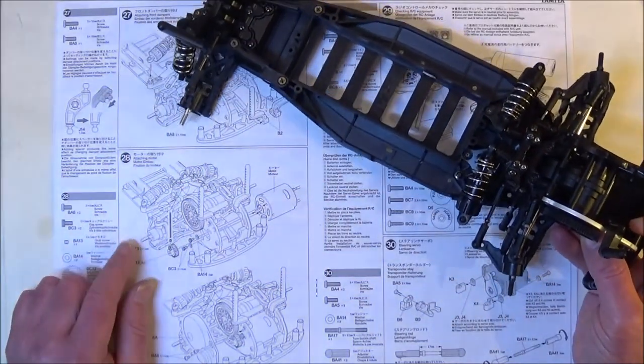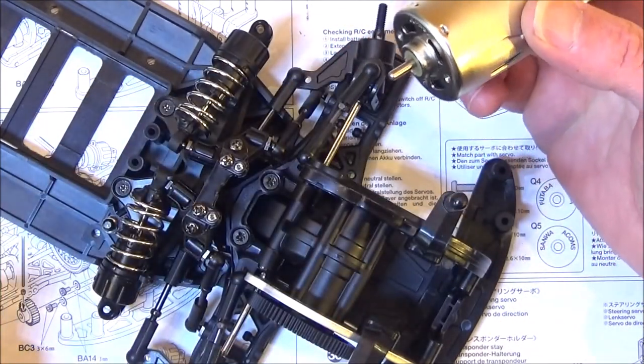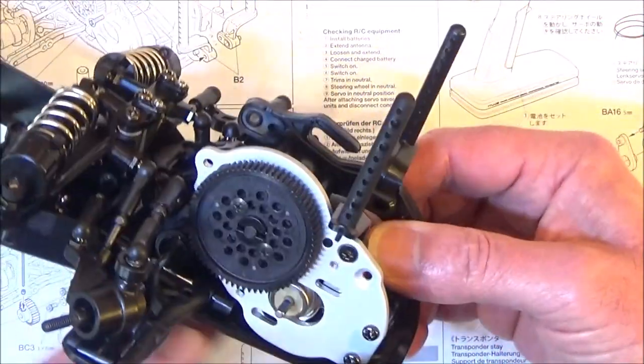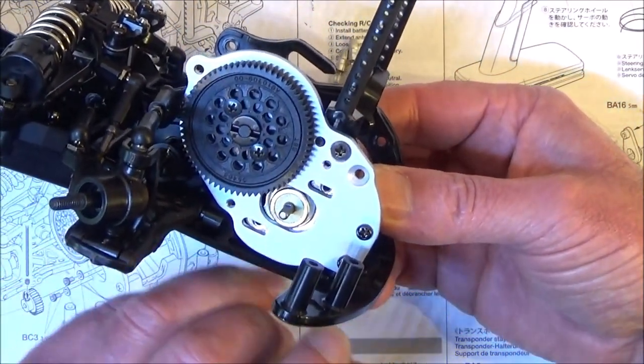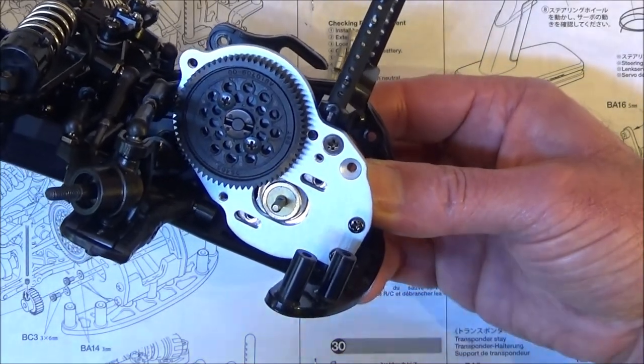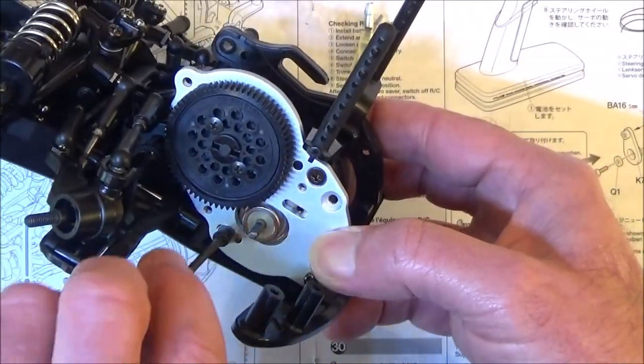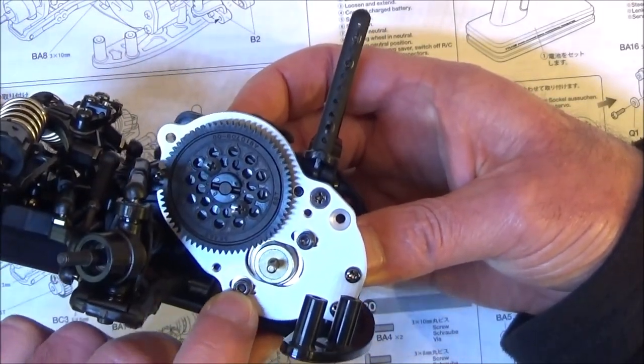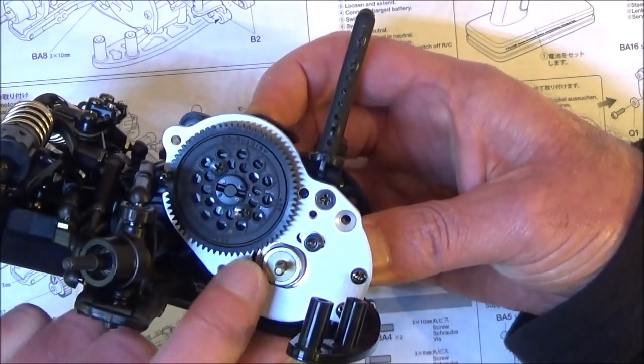The first thing we're going to do is step 28, which is attaching the motor. This kit comes with a Johnson motor, which is rather unusual. Most Tamiyas come with the Mabuchi, but anyway we're going to fit this one. We need to push the motor through and get the holes lined up in these slots, and then there are two cap screws that have to go in, which are BC3s, just six millimeter cap screws with a washer on each. We'll nip these up very lightly at first because we need to be able to move the motor to adjust the gap between the pinion and spur.